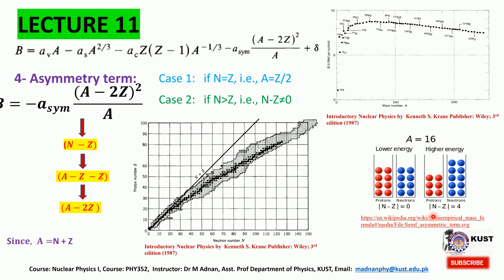We also discussed that when there is symmetry — that is, N minus Z equals zero — the system energy is lower. When neutrons are greater than protons for nuclear stability, the asymmetry in the proton-neutron number causes the system energy to increase, and hence the binding energy decreases by this amount. We will discuss how one can obtain the asymmetry potential while working with the Fermi gas model.